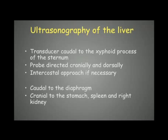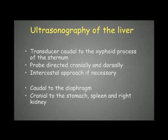To perform ultrasonography of the liver, we place the transducer caudal to the xiphoid process with the probe directed cranially and dorsally, observing the liver from right to left and from ventral to dorsal. We can also use an intercostal approach by placing the probe between the ribs — mostly for dogs with deep chest morphology where the liver sits behind the ribs.